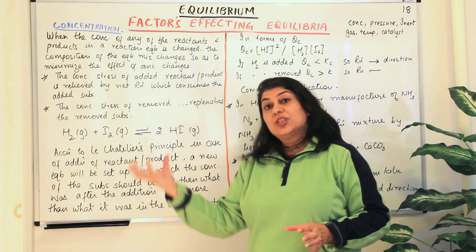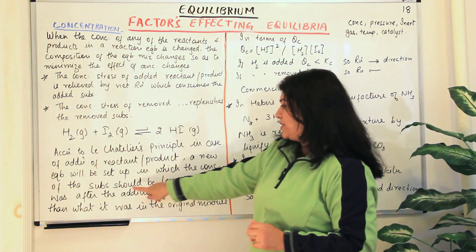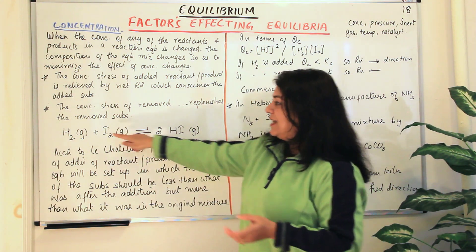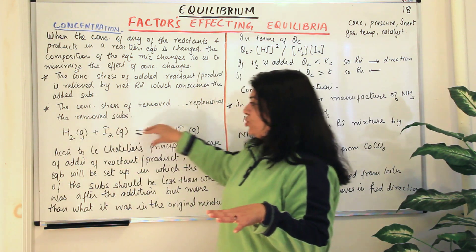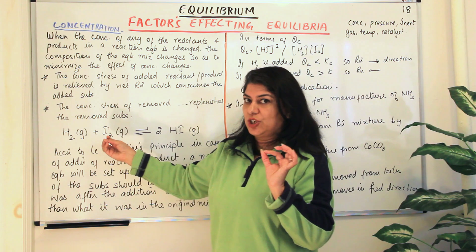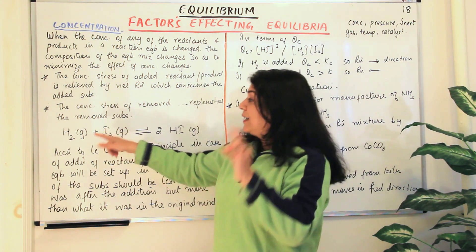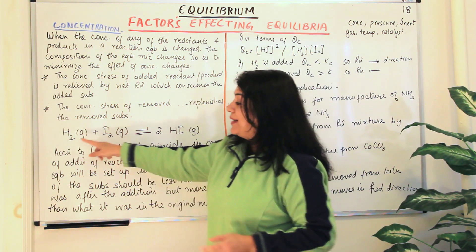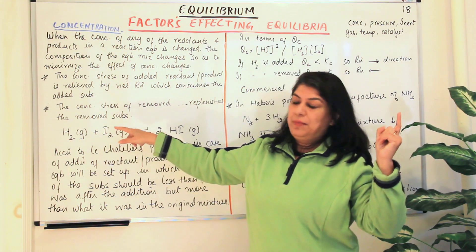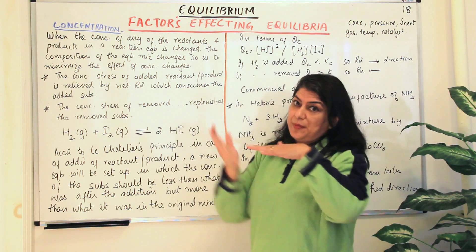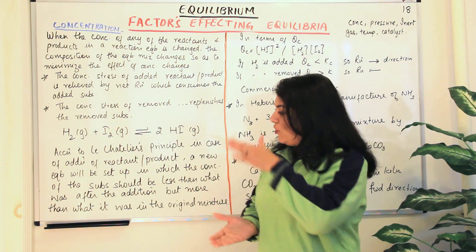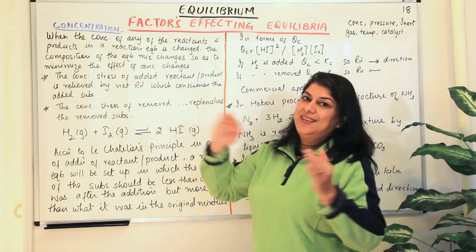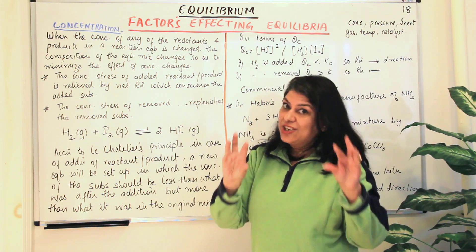In the final equilibrium state, after adding hydrogen, the reaction proceeded in the forward direction to use up some of that hydrogen. At the new equilibrium, the concentration of hydrogen will be less than what it was when the total amount was added, but more than the original concentration, because the ratio has remained the same as KC but the concentrations have changed. Therefore, a new equilibrium is established with different concentrations, but QC and KC become equal — the ratios become equal.